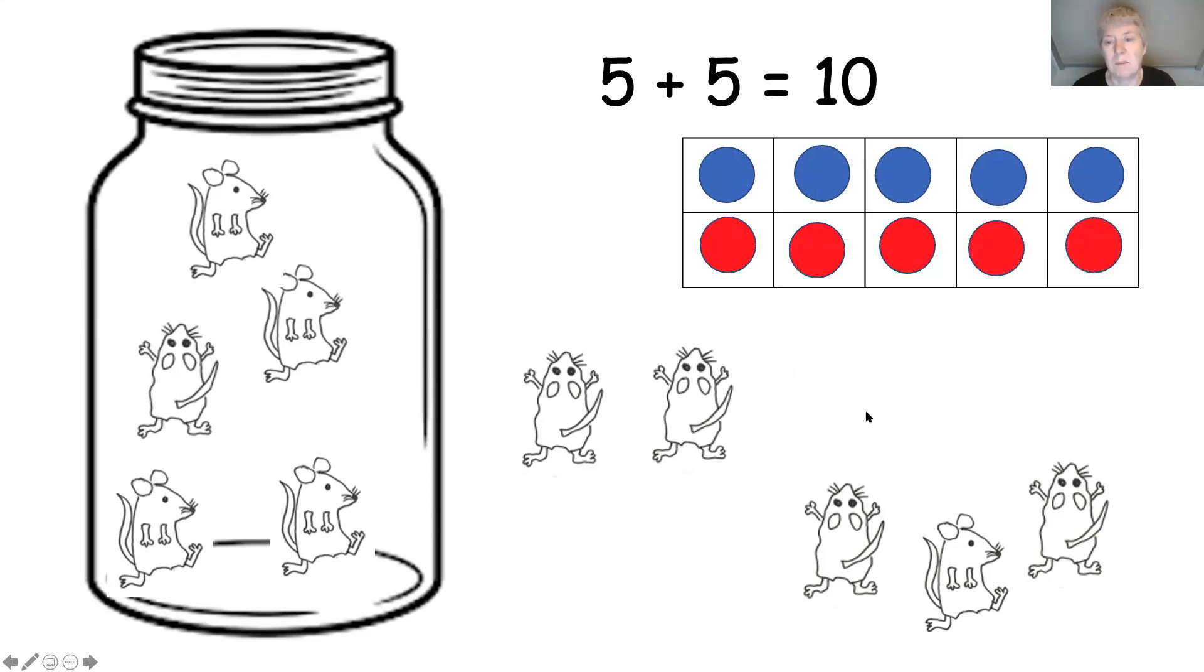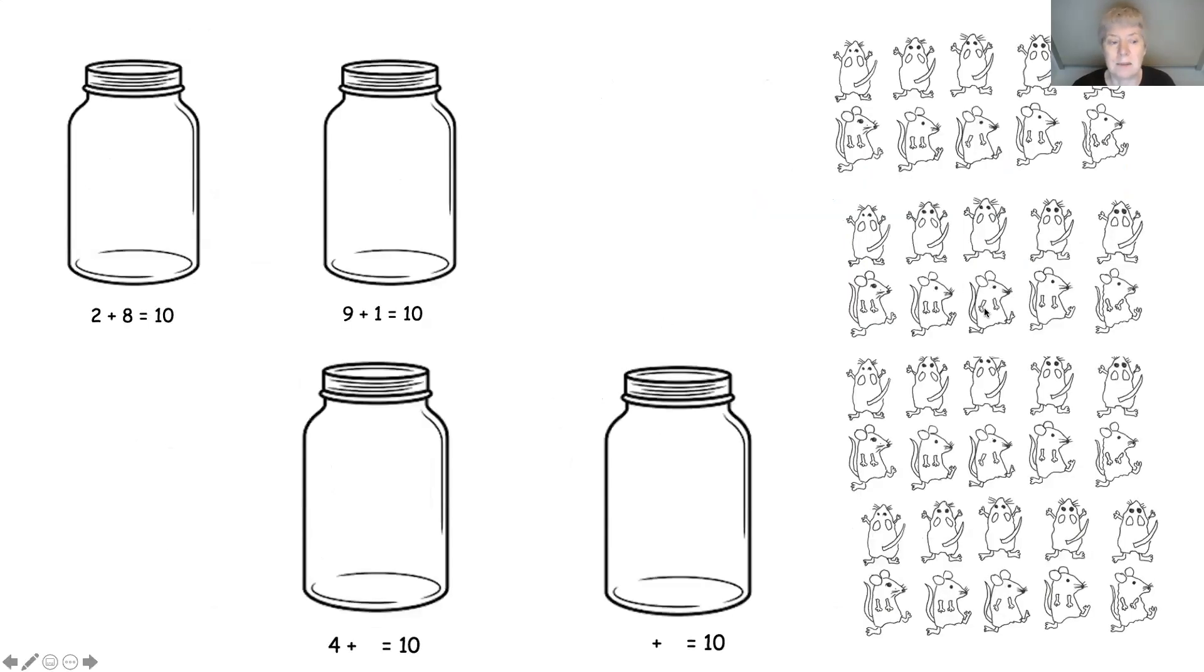Now in your pack today I've given you some jars and some mice. Two of the jars have got the sentence on to make ten. Can you put two mice in the jar and eight mice not in the jar? Nine mice in the jar and one mouse not in the jar. The other two are a bit trickier. For this one you need to put four mice in the jar and then put the rest of the mice outside the jar so there are ten mice all together. And then can you write the number of mice in there? And the last one you're going to decide: How many mice are in the jar? How many mice are out the jar? Stick them in and then write the number sentence to show what you've done. Have fun doing your challenge today and I'll see you tomorrow for some more maths. Thanks so much.